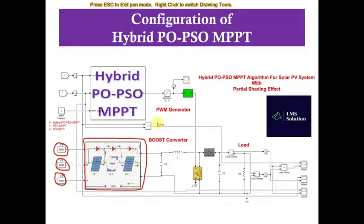What's the need of going for PO-PSO MPPT? When you implement PO MPPT for a partial shaded solar PV system, PO normally finds only the first local maximum and after that it never finds the global maximum power point. This is a problem in the PO MPPT algorithm. In the PSO MPPT algorithm, PSO is a particle swarm optimization — it is normally population-based, meaning we give a random population to get the global solution. If the number of population is very high, the process of finding the global point takes more time, which is a problem in PSO.